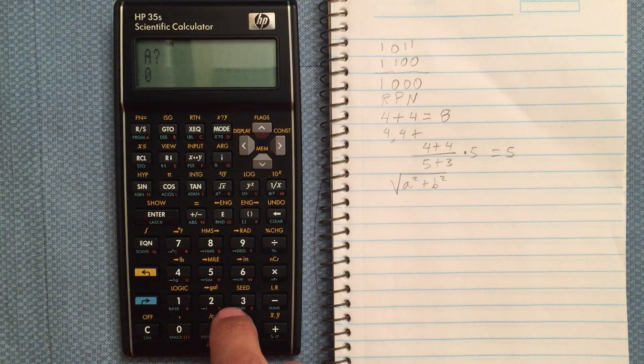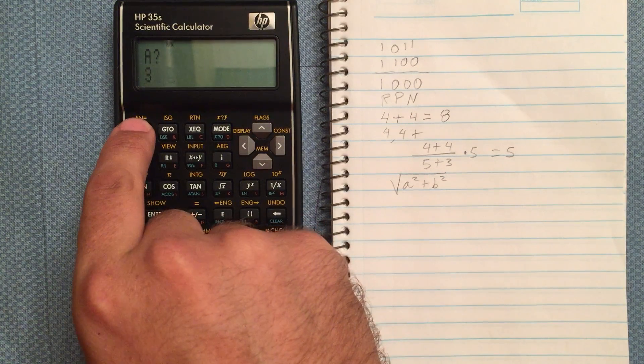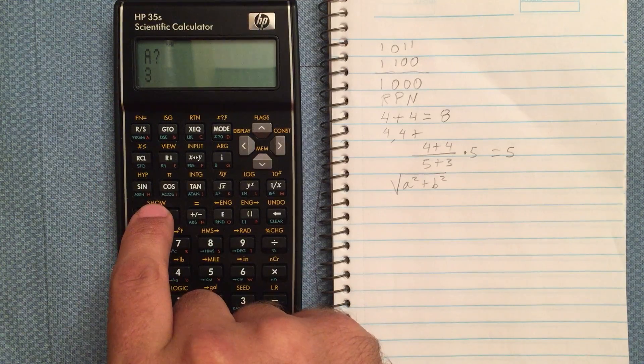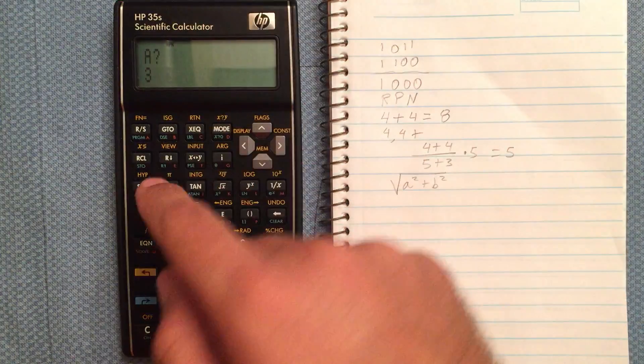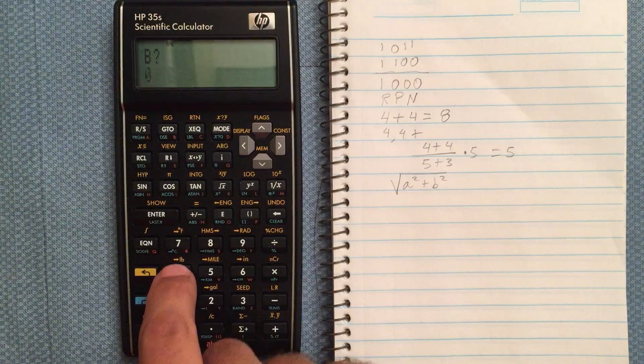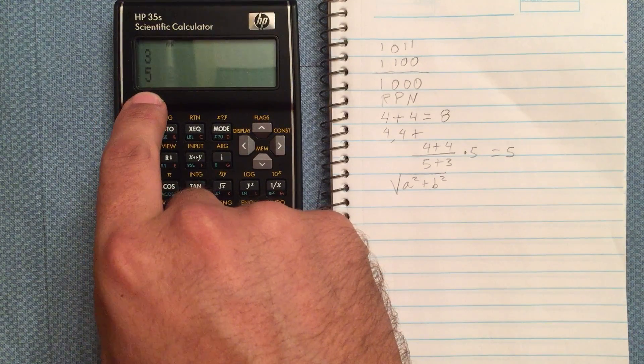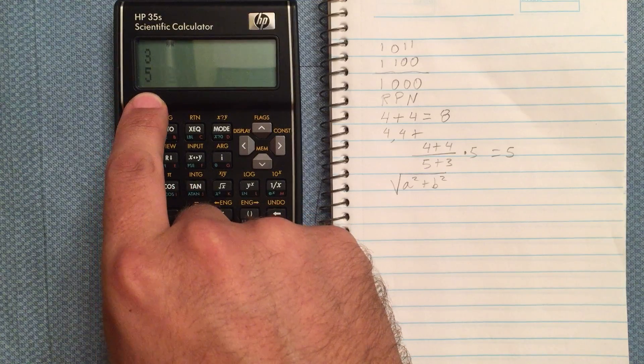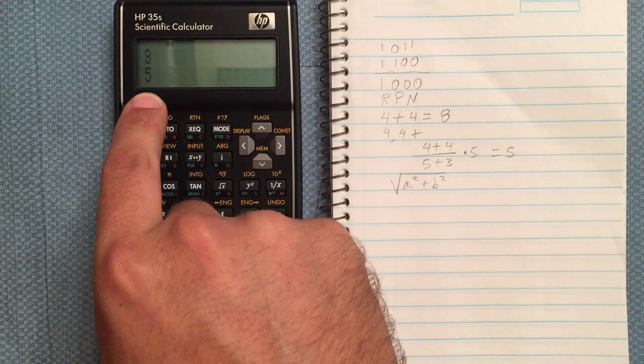Let's do 3. Hit the run/stop key, not enter. If you hit enter, then it just increments that in the stack. So run/stop, ask for B, let's put in 4, and stop. And it gives us our answer of 5. So the square root of 3 squared plus 4 squared should be 5.